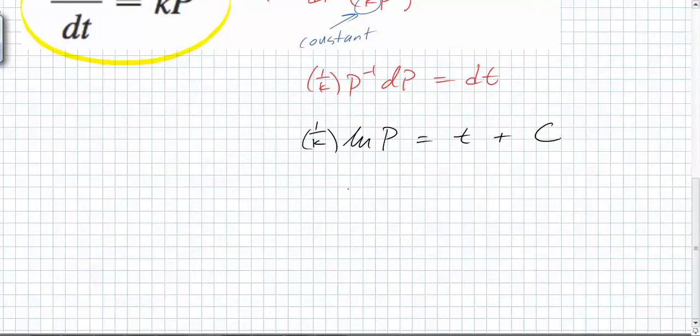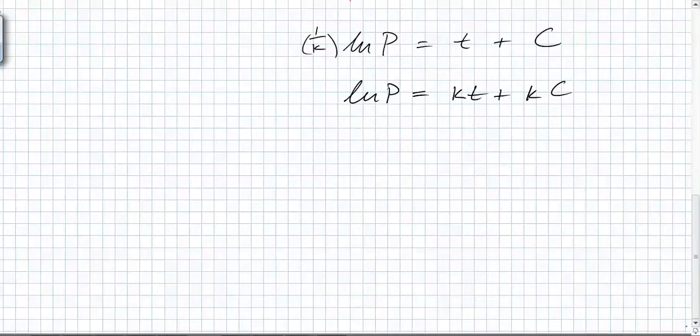So what should I multiply both sides by? Put the calculator down. What should I multiply by? K. Guys, stop talking. So what do you end up with? kt plus kc. What are we trying to isolate? P. So this means it's going to be e to the kt plus kc is equal to what? P.